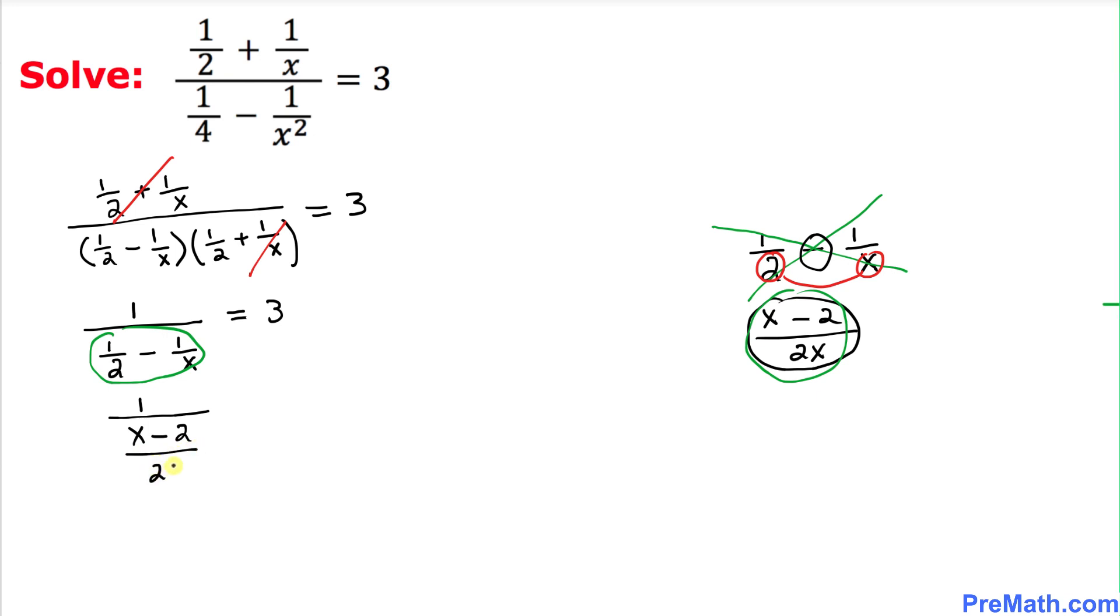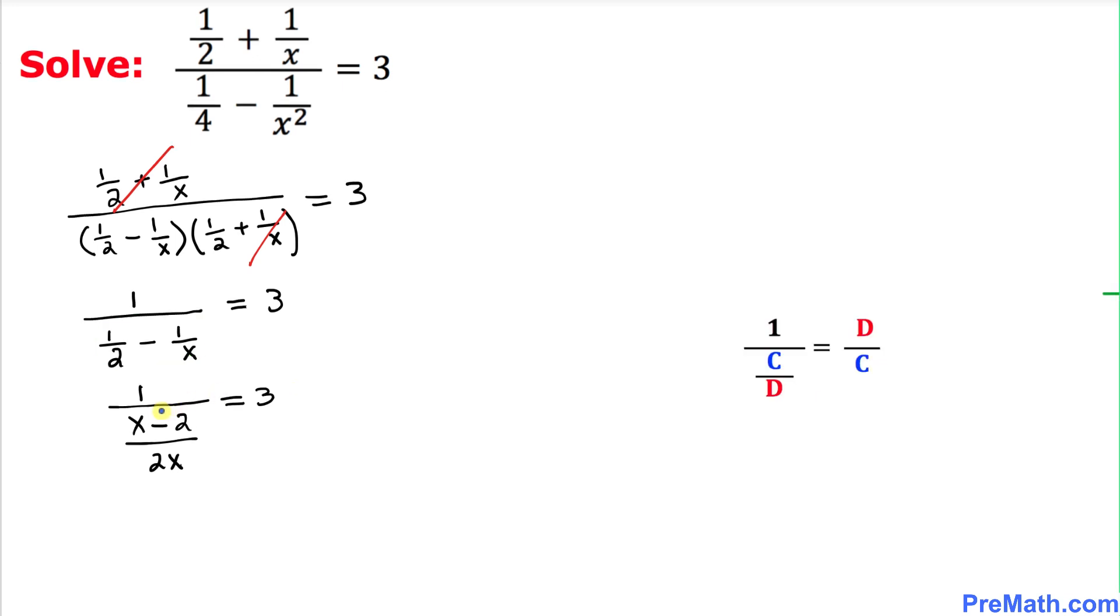Let's look at this left hand side. We have 1 over this fraction, so we are going to use this rule: when we have 1 over a fraction c/d, then this bottom part gets flipped over, that becomes d/c. That means this could be written as 2x/(x - 2) equals 3.